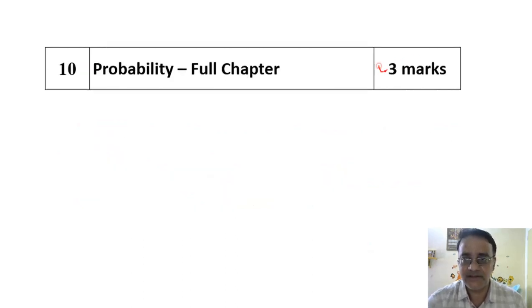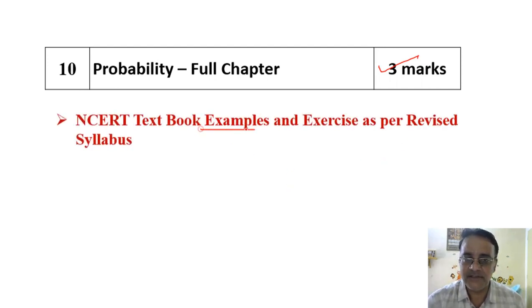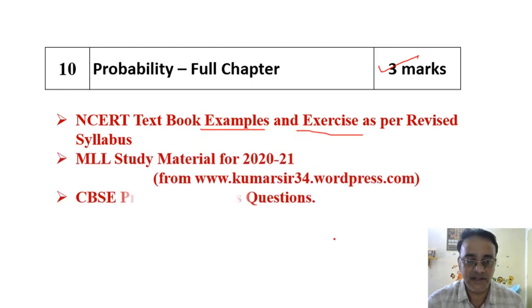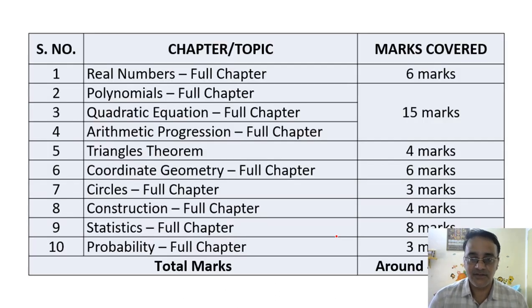And the next one is three marks. I just now told you that together these two chapters is 11 marks. So dono chapters mila ke aap 11 marks maan ke chaliye. And Probability mein all examples, exercise questions you have to complete along with minimum study material and all CBSE previous 10 years questions. If you complete all these questions you can easily score 11 marks along with Statistics.